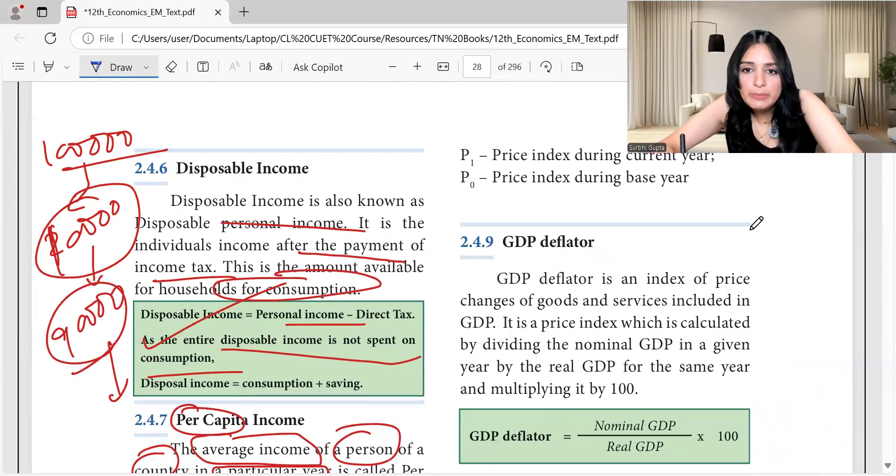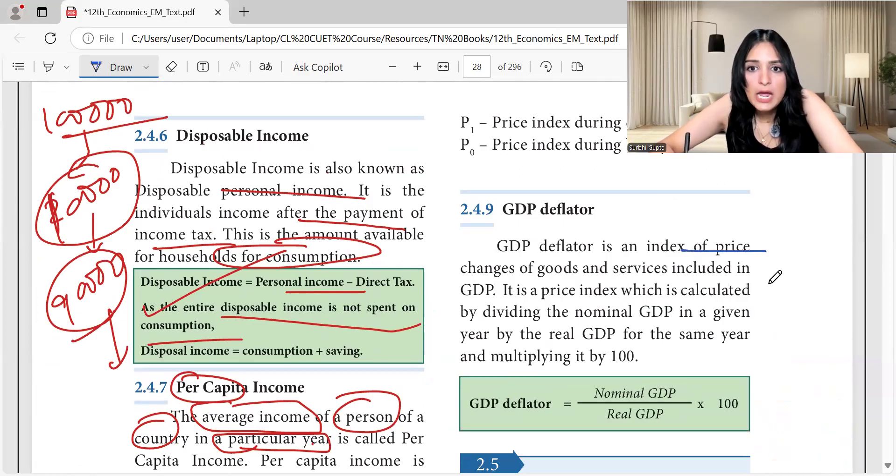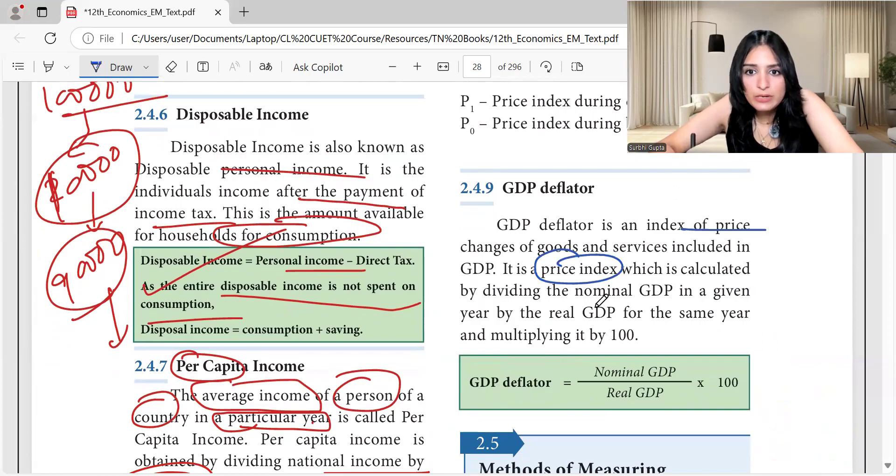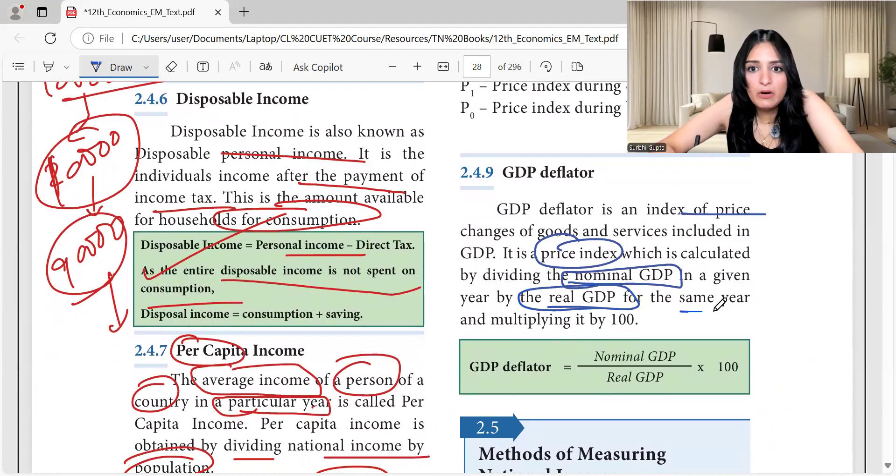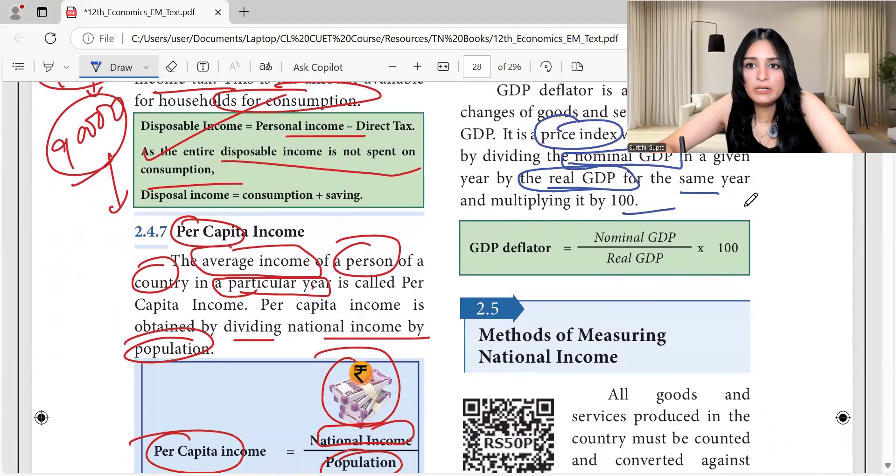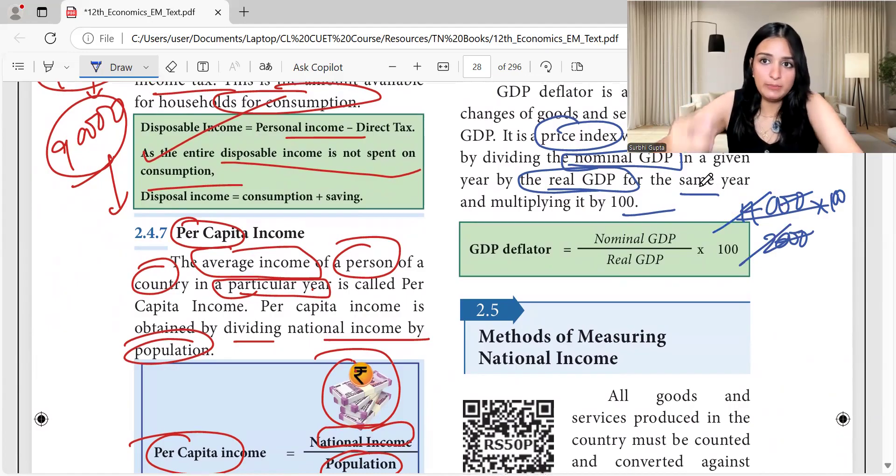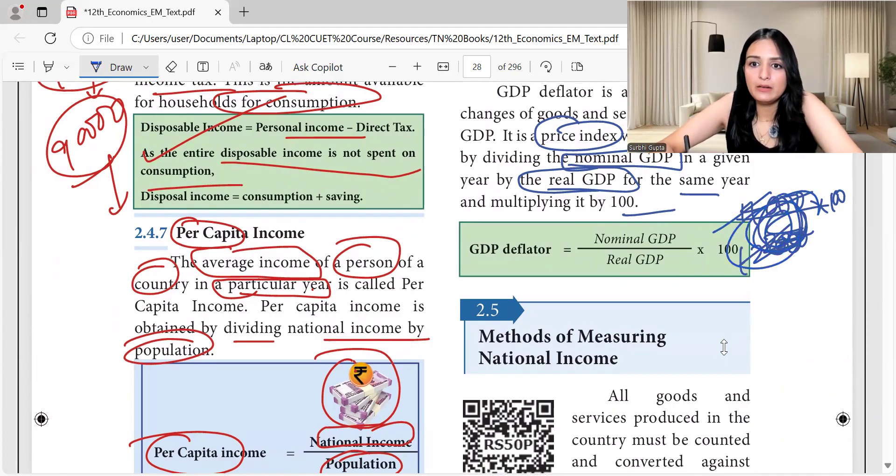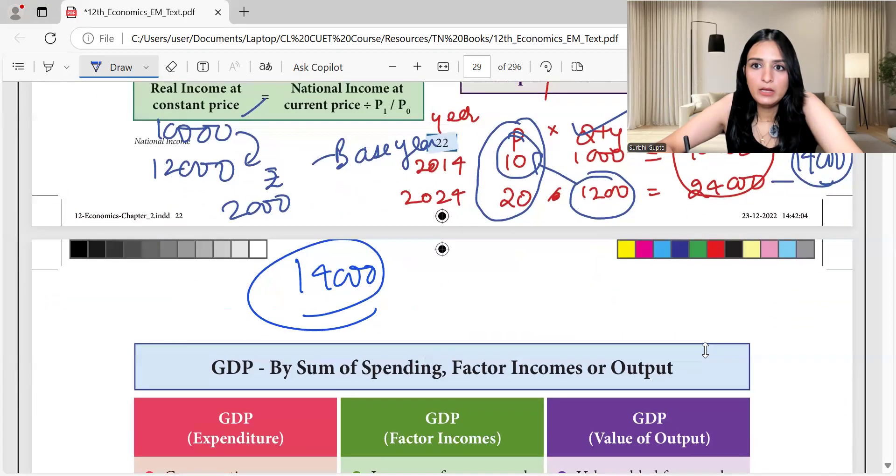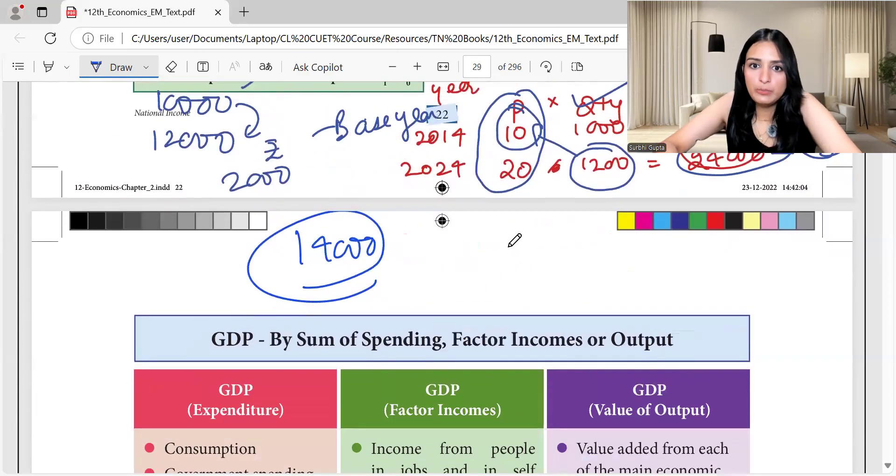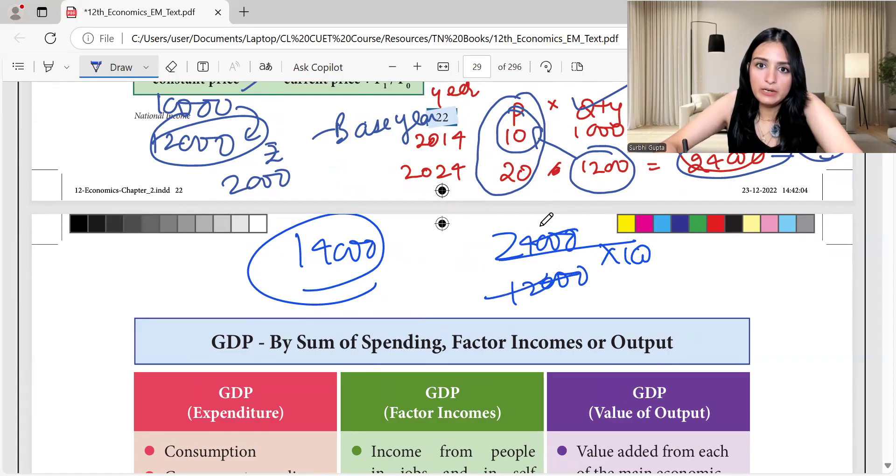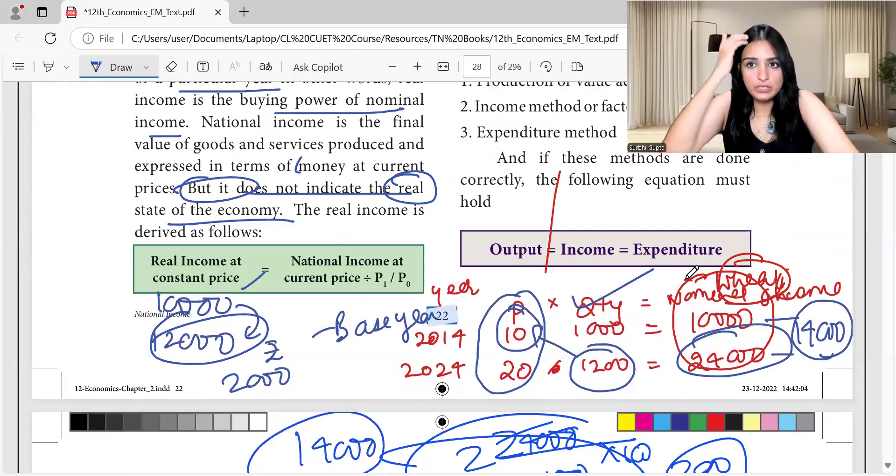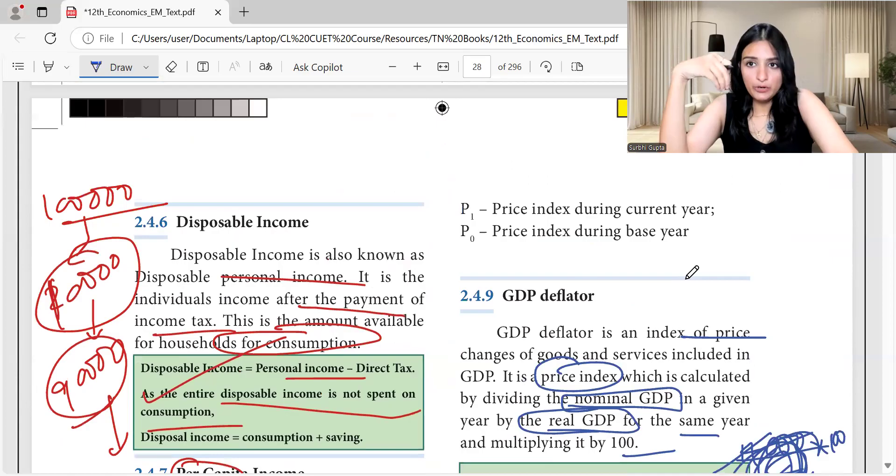Okay, so then let's move to GDP deflator. What is GDP deflator? GDP deflator is an index of price changes of goods and services included in GDP. It is the price index which is calculated by dividing nominal GDP in a given year by real GDP of the same year. So GDP deflator, we know nominal GDP. Here is the example: nominal GDP in this year was 24,000 and real GDP was 12,000 into 100. So it becomes 200. Your GDP deflator is 200. So that's your GDP deflator. And that's how we come at GDP deflator. So that's nominal income upon real income into 100.